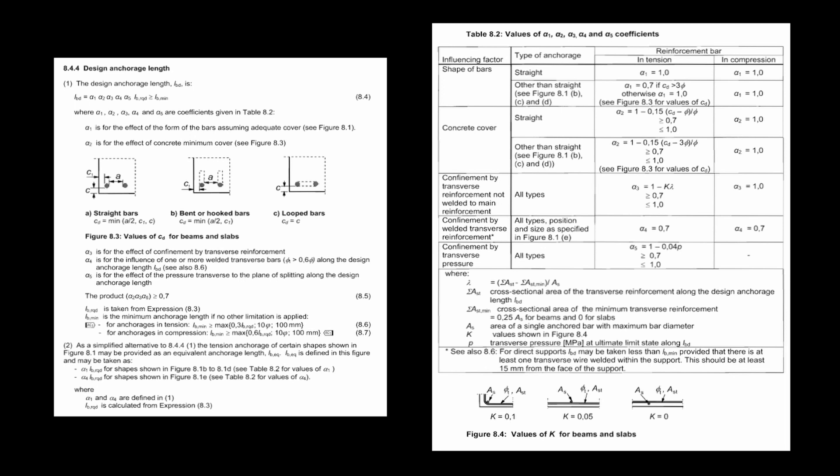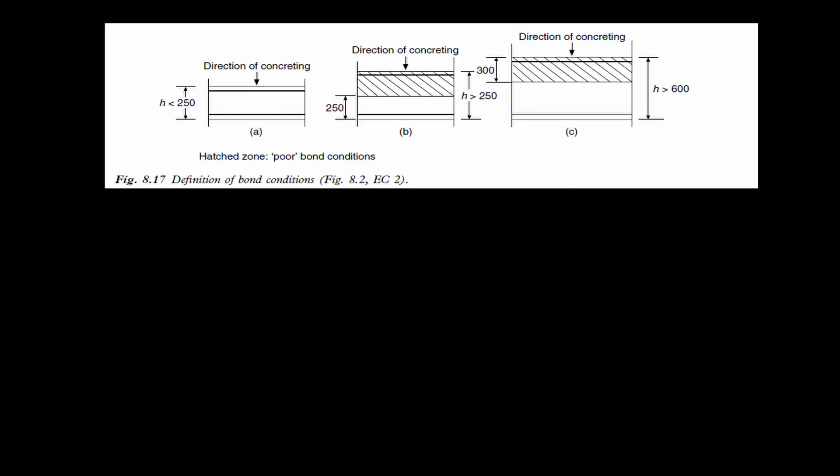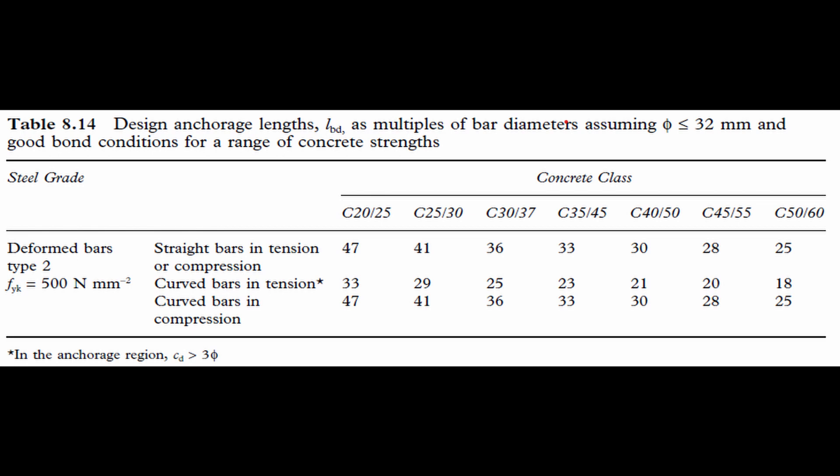But for the lazy people, we'll just use this table. And multiply things by 0.7 if the bond conditions are poor, as explained here. The same formulas are used for hooks, with different values for alpha. In reality though, we use this table for all cases, and divide by 0.7 for poor bond conditions.